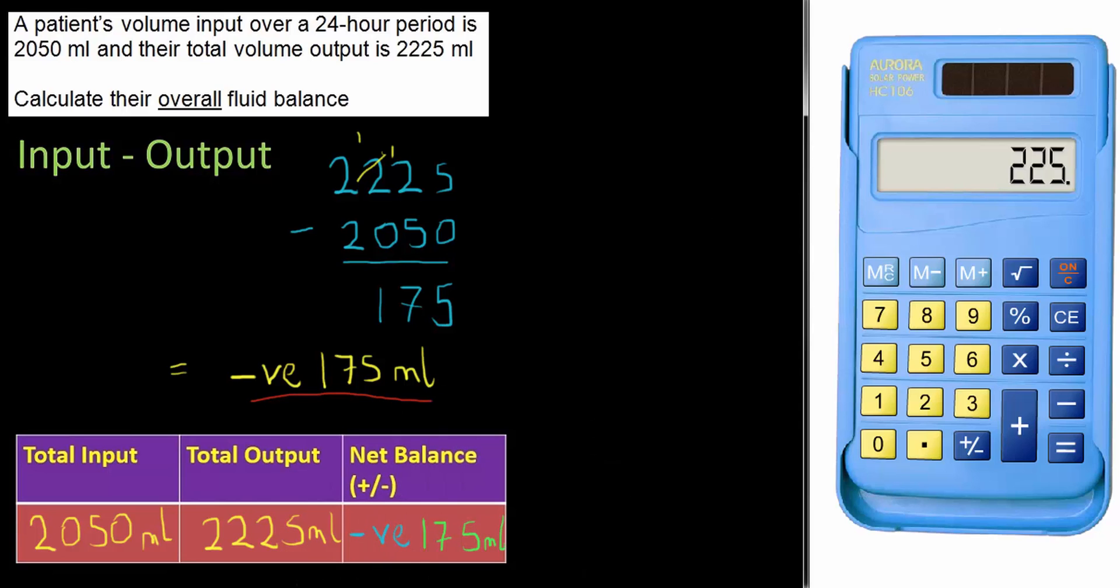One last check with the calculator. Clear the memory. Input, looking at my table is 2,050 millilitres. Take away output 2,225 millilitres. And sure enough, the answer was negative, negative 175 millilitres.